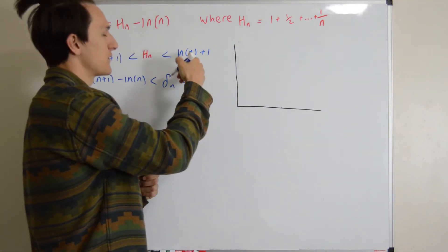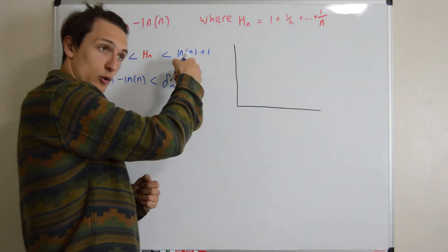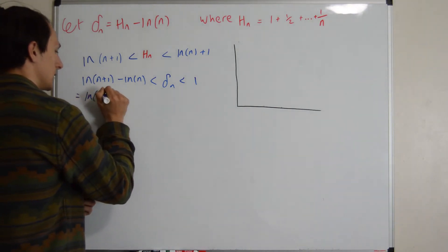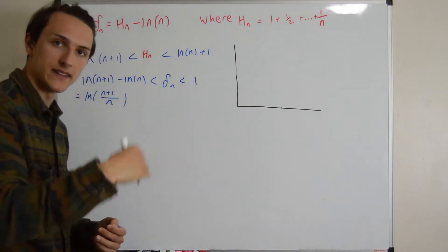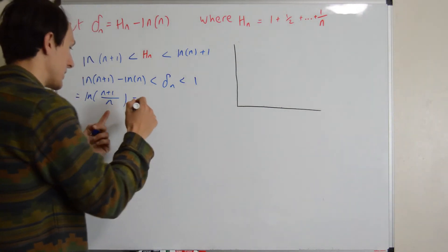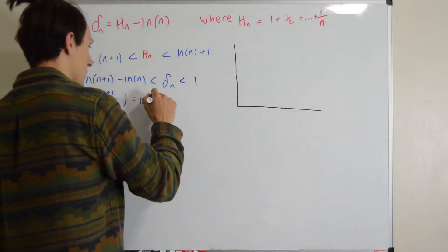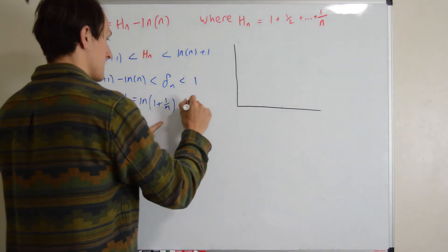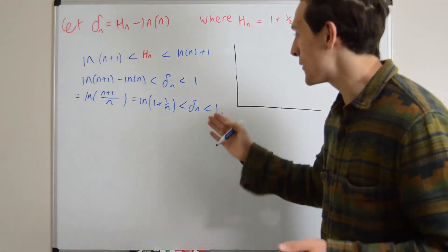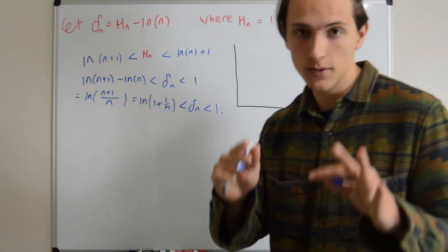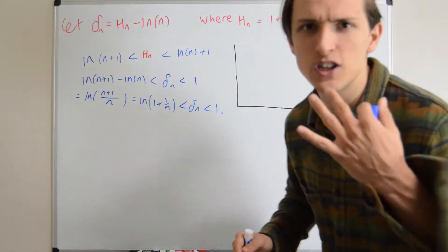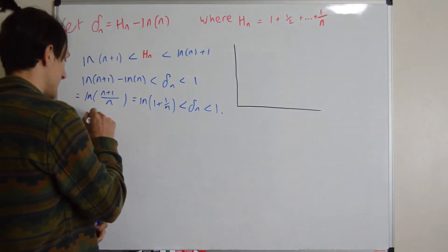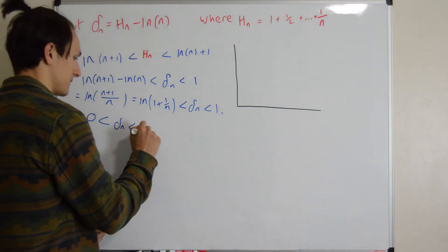And on the other side we have the natural logarithm of n+1 minus the natural logarithm of n, which by log rules equals the natural logarithm of 1 plus 1 over n. Now we have bounds for delta_n: it's less than 1 and it's greater than the natural logarithm of 1 plus 1/n, which is positive because the natural log of 1 is 0. So delta_n is bounded between 0 and 1.